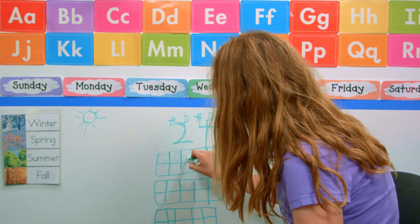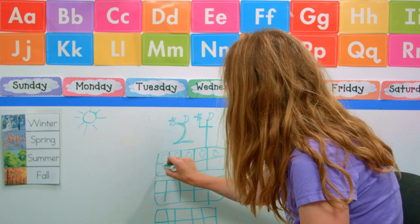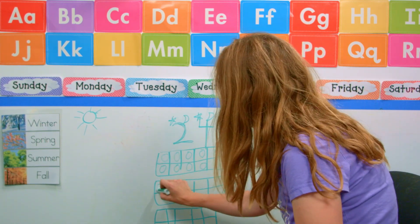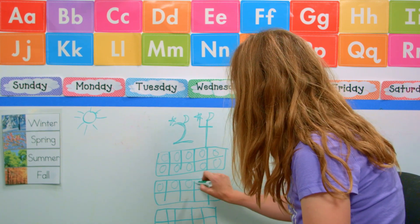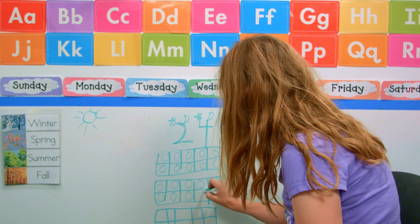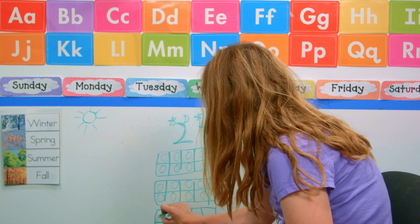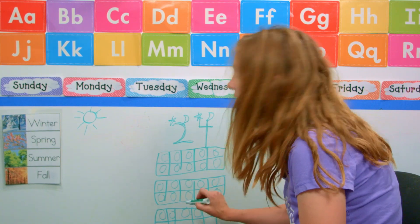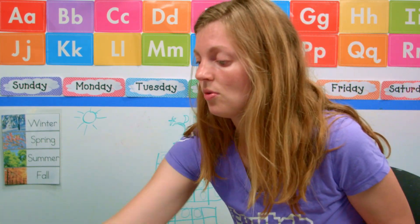And we're going to go 1, 2, 3, 4, 5, 6, 7, 8, 9, 10, 11, 12, 13, 14, 15, 16, 17, 18, 19, 20, 21, 22, 23, and 24. So that is another way to make 24.